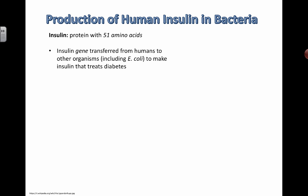The idea is that if a person with type 1 diabetes can't produce insulin, maybe we can get another organism — like bacteria — to produce it for us. We can take the insulin gene and transfer it to E. coli, a type of bacteria, and basically trick the bacteria into being our little mini factory. When we put the gene in, the bacteria starts reading it as its own instructions and produces the protein we need.